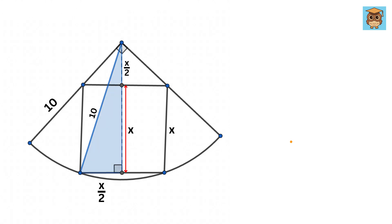Now finally consider this right triangle. This side is X over 2. This side will be X over 2 plus X, or 3X over 2, and the hypotenuse is 10.